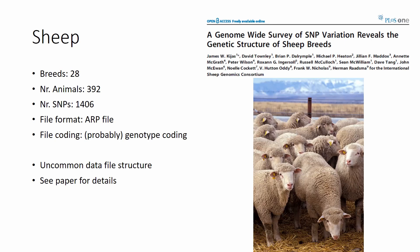There is an additional sheep dataset published in PLOS ONE by the same group — I found this rather by accident when looking for the large sheep dataset. It is from 28 breeds and almost 400 animals, but just 1,400 SNPs. These 1,400 SNPs are used in an admixture study which is well described in the paper, so check the paper for full information. The file format is an ARP file, which I think is probably genotype coding — it's quite an interesting format, and a good challenge if you want to practice your data wrangling skills.